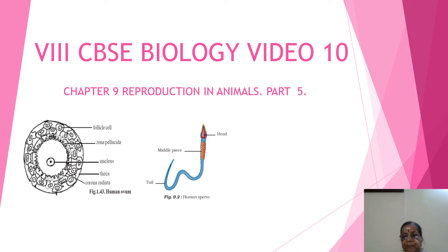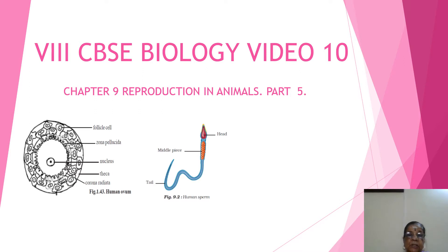In Reproduction in Animals, as covered in videos 6, 7, 8, and 9, we learned in detail about asexual and sexual reproduction. Asexual reproduction involves a single parent, no formation of gametes, and variation will not occur. Sexual reproduction involves two parents, formation of male and female gametes, and variation will occur. Reproduction is the continuation or perpetuation of the species.